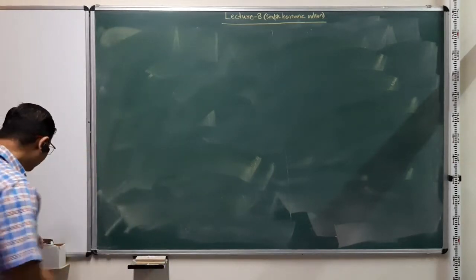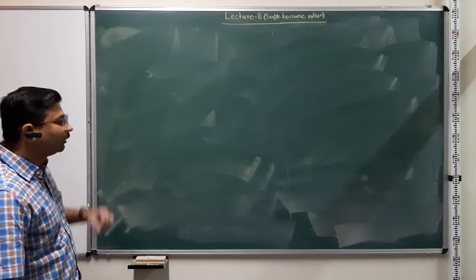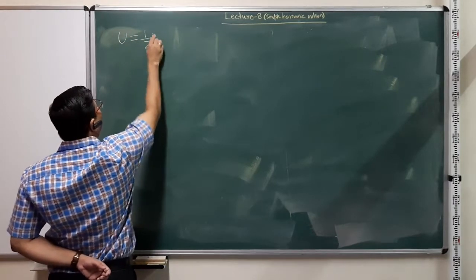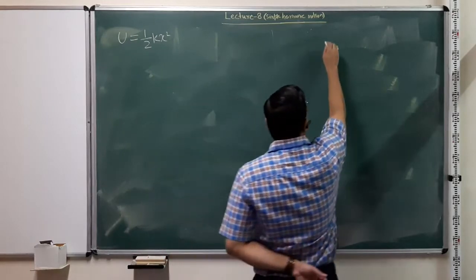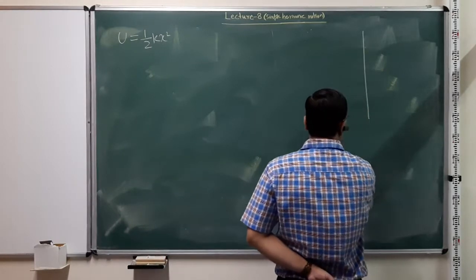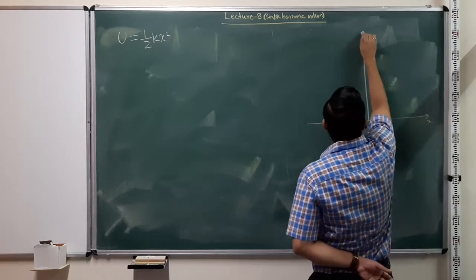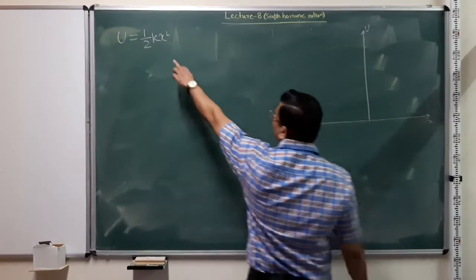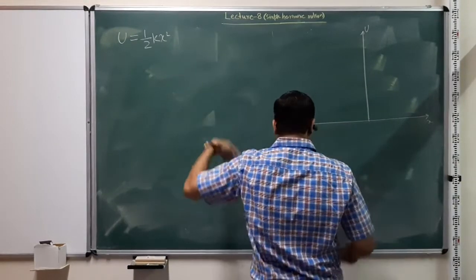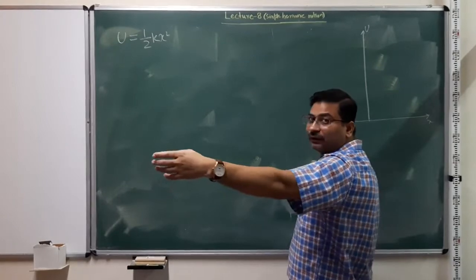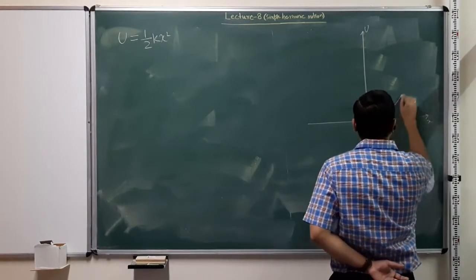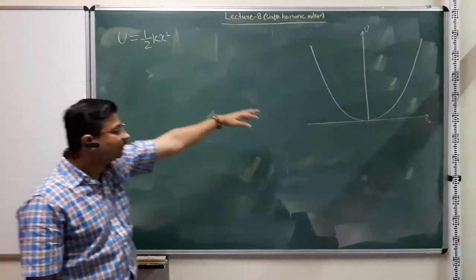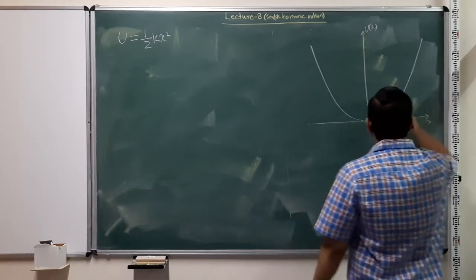Before discussing more about the simple harmonic oscillator, let us look at the nature of this potential energy. We said that U is equal to half k x squared. If we plot this with x on one axis and U on the other, we can see that at x equals 0 it is 0, and on either side it extends from minus infinity to plus infinity — which is basically the shape of a parabola. So the potential energy U(x) looks like a parabola.